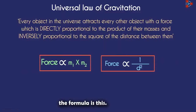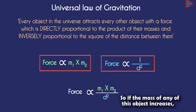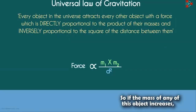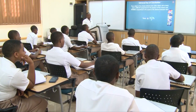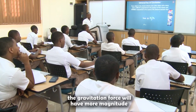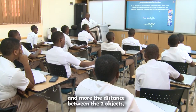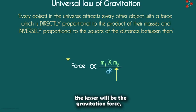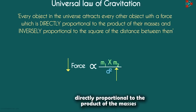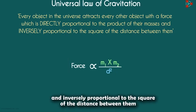With this data, we can write it mathematically. So if the mass of any of the objects increases, the gravitational force will have more magnitude. And the more the distance between the two objects, the lesser will be the gravitational force. It is directly proportional to the product of the masses and inversely proportional to the square of the distance between them.